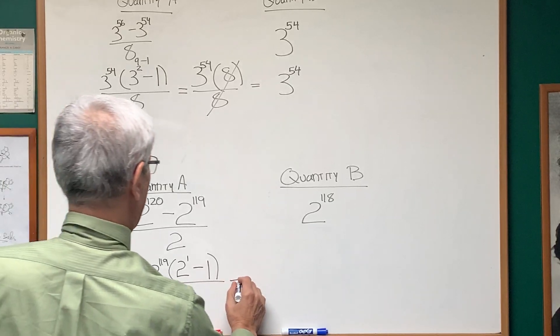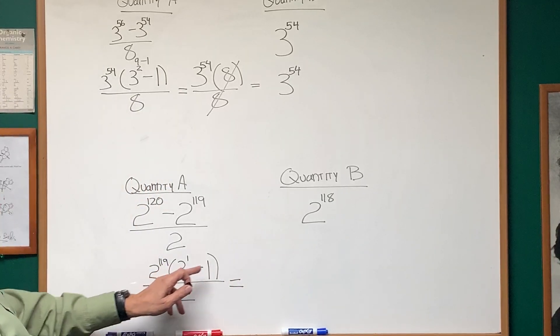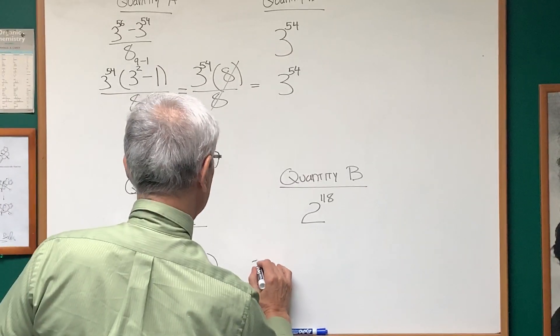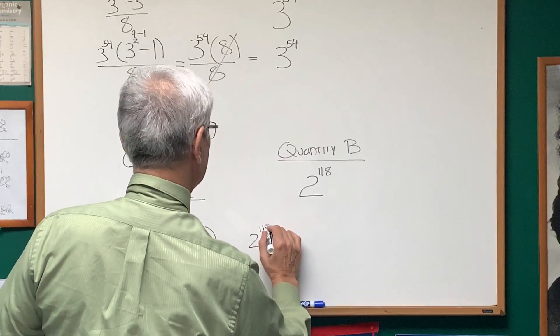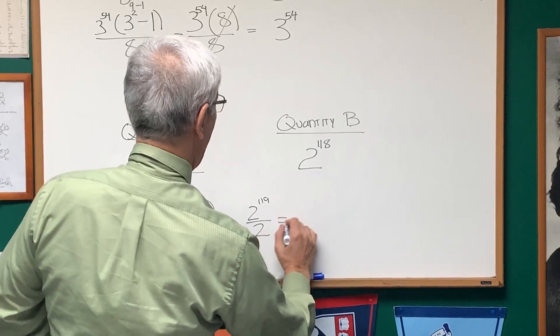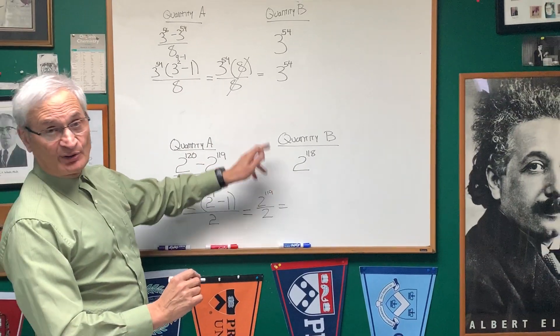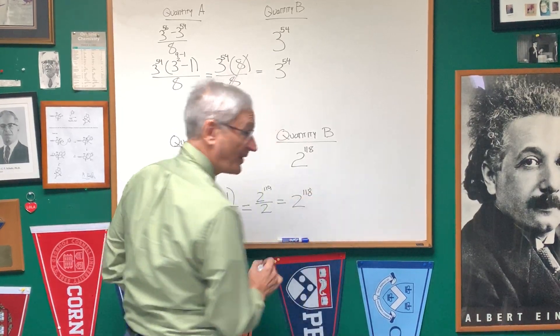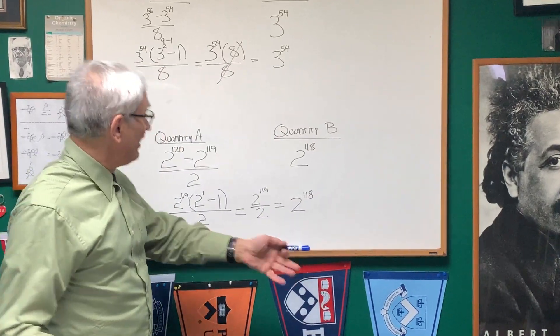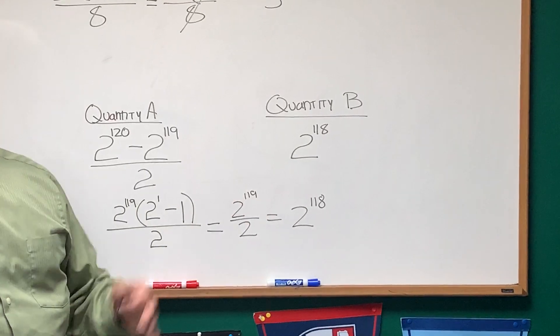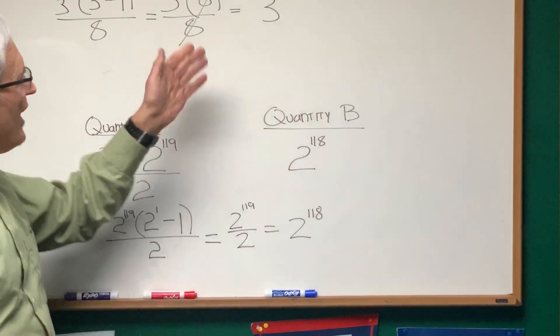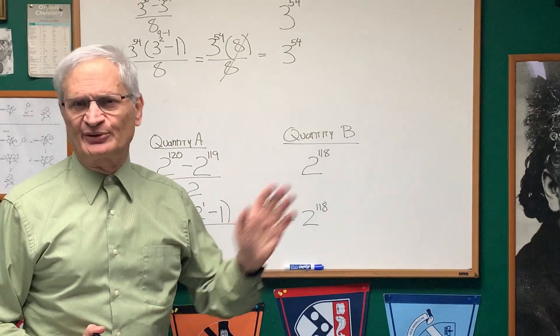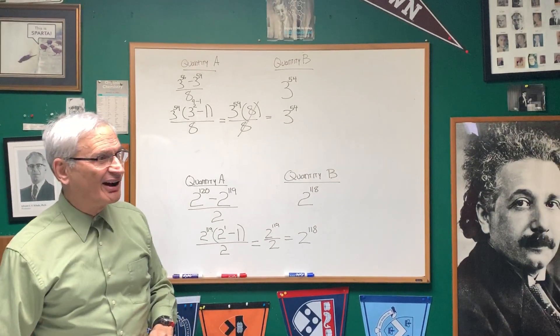So, let's see what we have here. That's going to be 2 to the 1st power minus 1 is just 1, so this is 2 to the 119th power over 2. And if I cancel a power of 2 from that, this gives me 2 to the 118th power. Once again, the two quantities are equal, and they're pretty much the same problem, but just giving you practice with different bases and different environments.